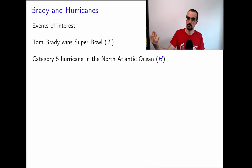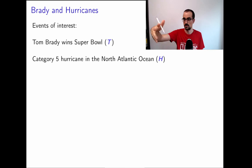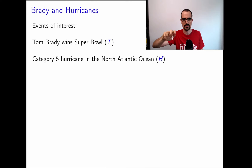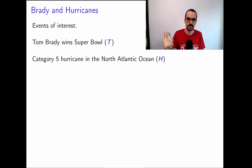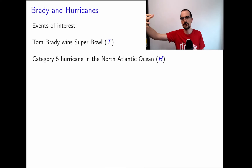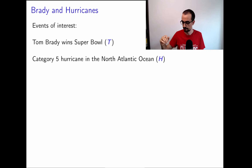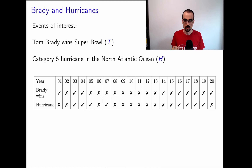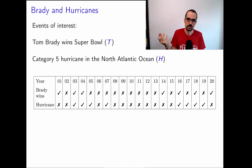To illustrate the issue with real data, let's look at another example. I just came up with this — I looked up stuff on Wikipedia and didn't cherry-pick until I got something strange. We're going to examine the relationship between two events: Tom Brady wins the Super Bowl, and there's a Category 5 hurricane in the North Atlantic Ocean, from 2001 to 2020.